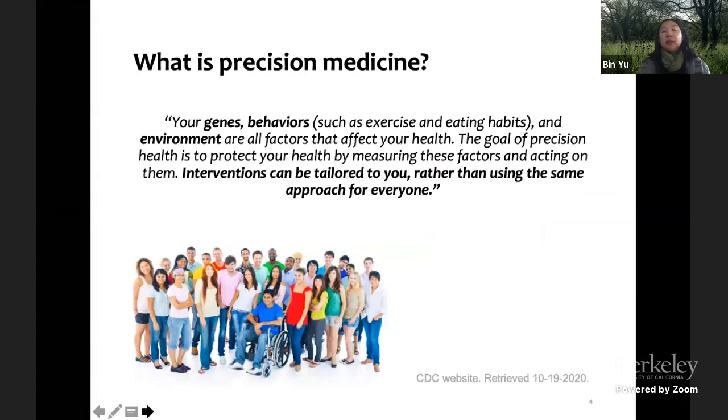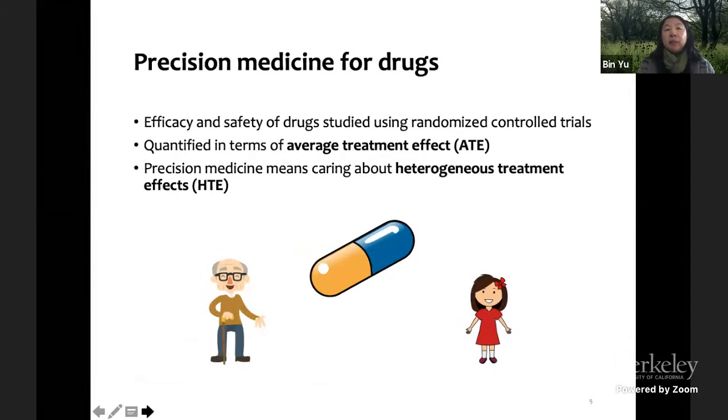This is a project that tried to work on precision medicine. It's defined by CDC as genes, behavior, environment that affect our health and we want interventions and treatment diagnosis to be tailored to individuals or at least subgroups, not just for the whole population. In particular, our work addresses precision medicine for drugs, how do we figure out whether the drug is effective? Traditionally, FDA pays attention to average treatment effect, but now the field is moving to heterogeneous treatment effect.